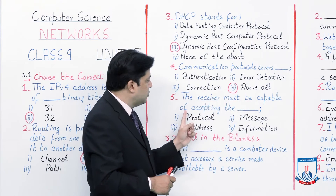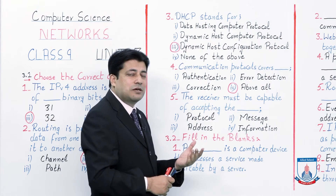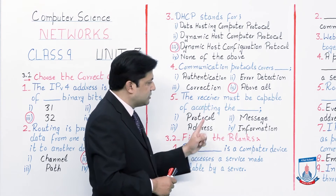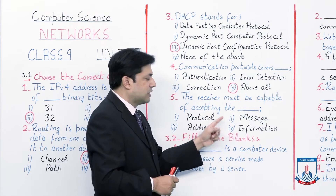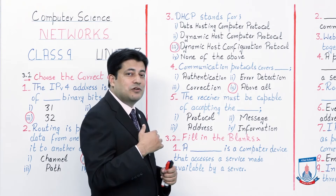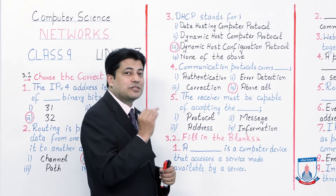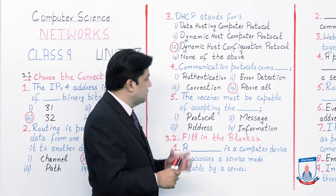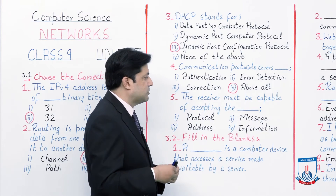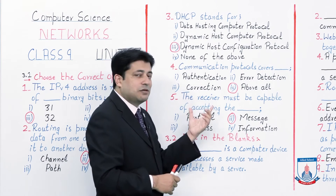Number 5: The receiver must be capable of accepting the dash. Options are: protocol, message, address, information. From our lectures we saw that the sender sends a message to the receiver, and the receiver must be capable of accepting the message. So the answer is option 2 — 'message.' That completes the multiple choice questions, or MCQs.